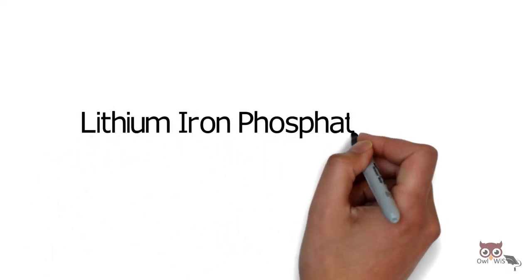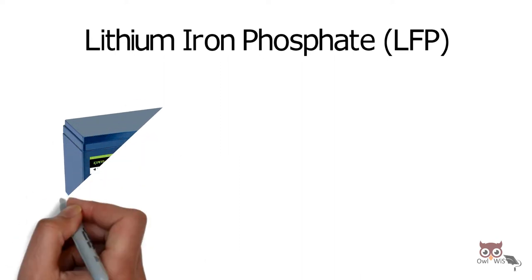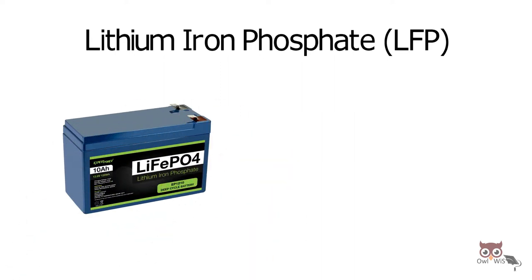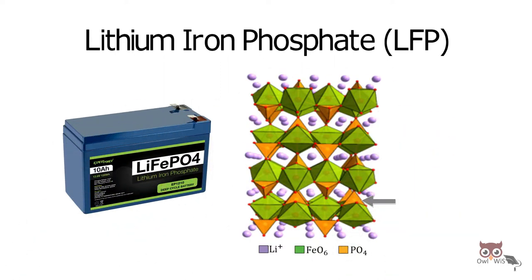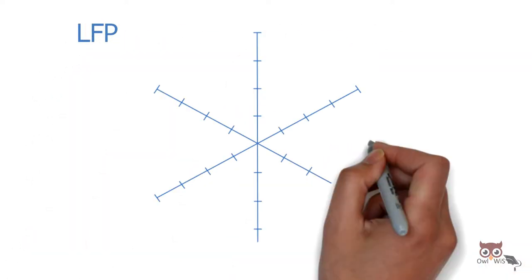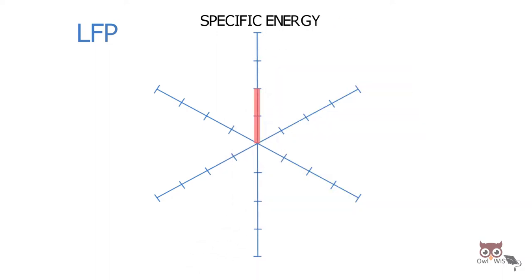Lithium Iron Phosphate (LFP), also known as lithium ferro-phosphate, uses phosphate as an active material in its cathode. It has relatively low specific energy but very high specific power.